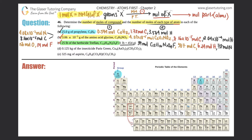Part D: 0.125 kilograms of the insecticide Paris green — Cu₄(AsO₃)₂(CH₃CO₂)₂. To convert kilograms to grams, multiply by 1000: 0.125 kg × 1000 = 125 grams. This compound has elements appearing in multiple places, so let's simplify by combining: Cu₄, As₂, and we need to count the total O, C, and H.